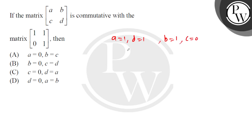Now, given the options, if we check — A and D are equal, that is 1, and C is 0. This is option C.